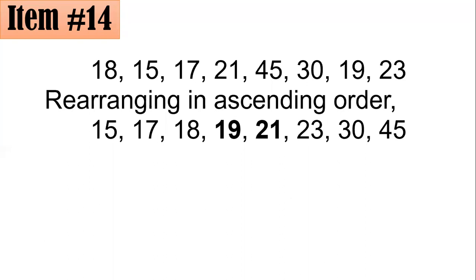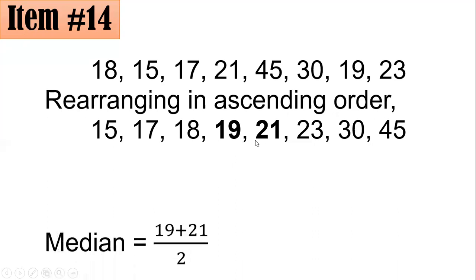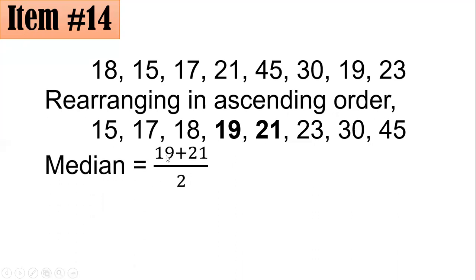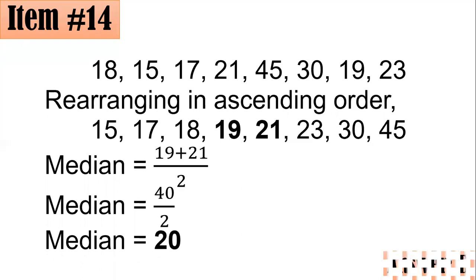Since we have 8 scores and 8 is an even number, to get the median we take the mean of the 2 middle scores. The median is 19 plus 21 all over 2. That's 40 over 2, or 20 — letter B.